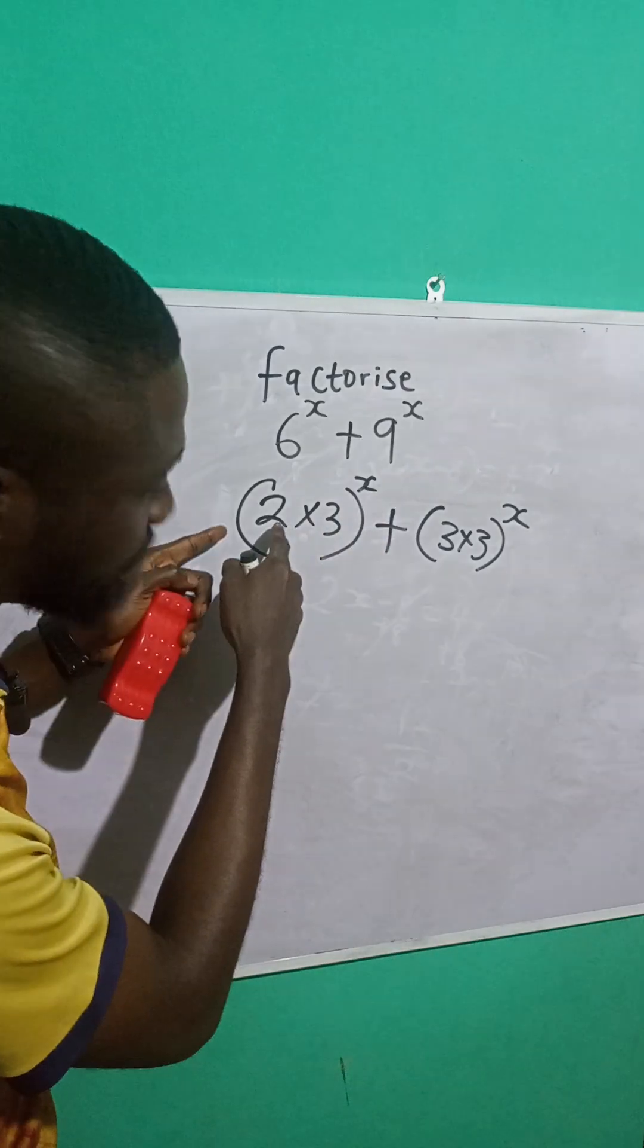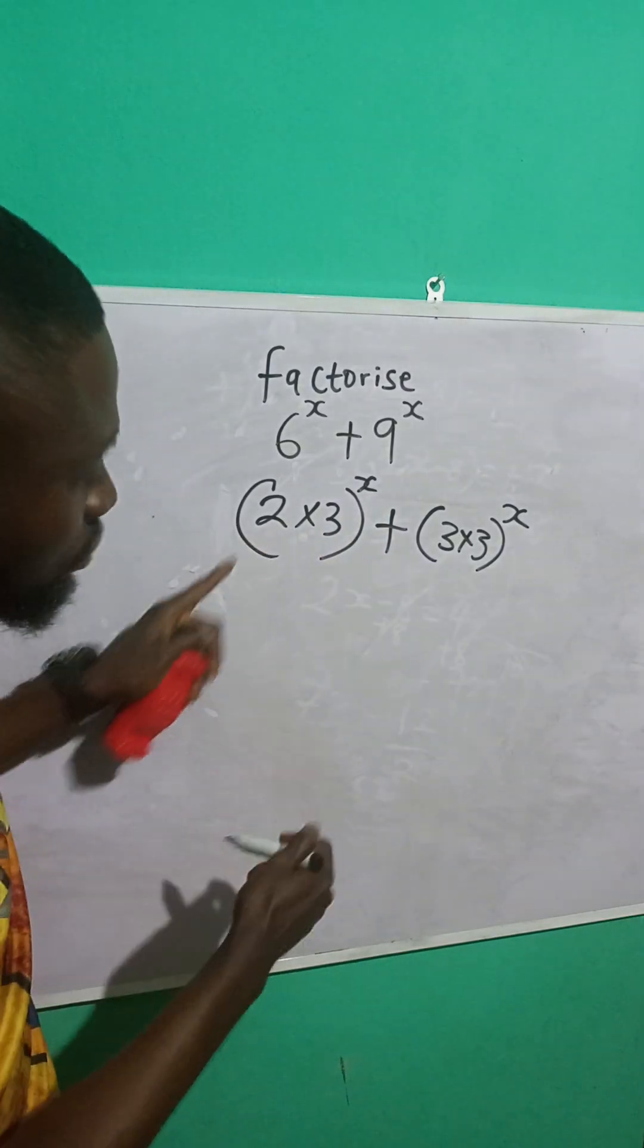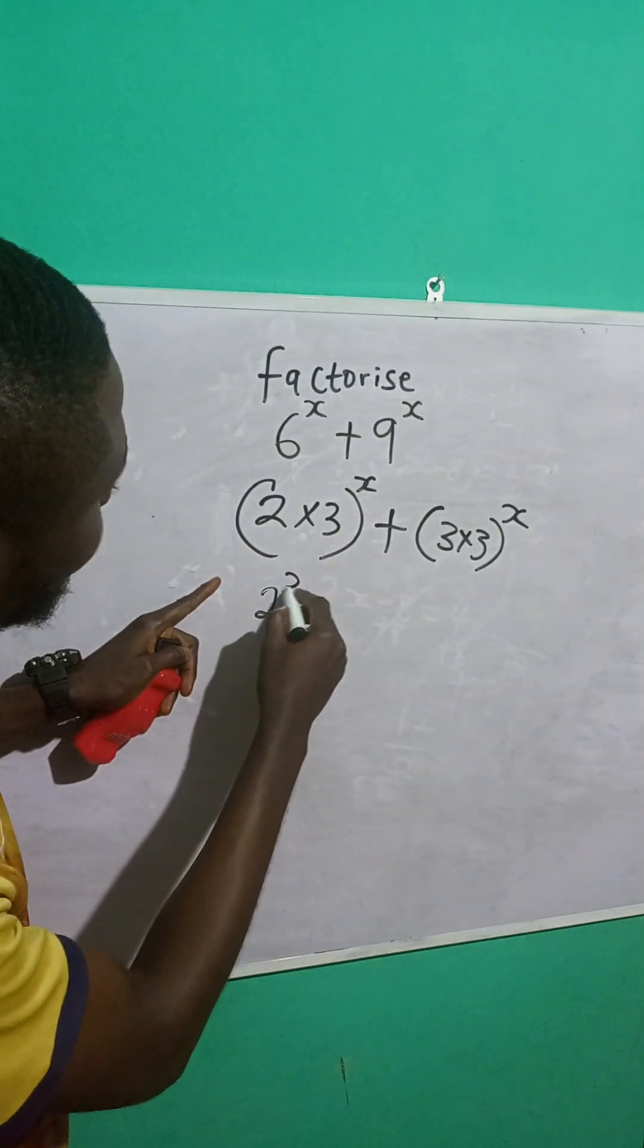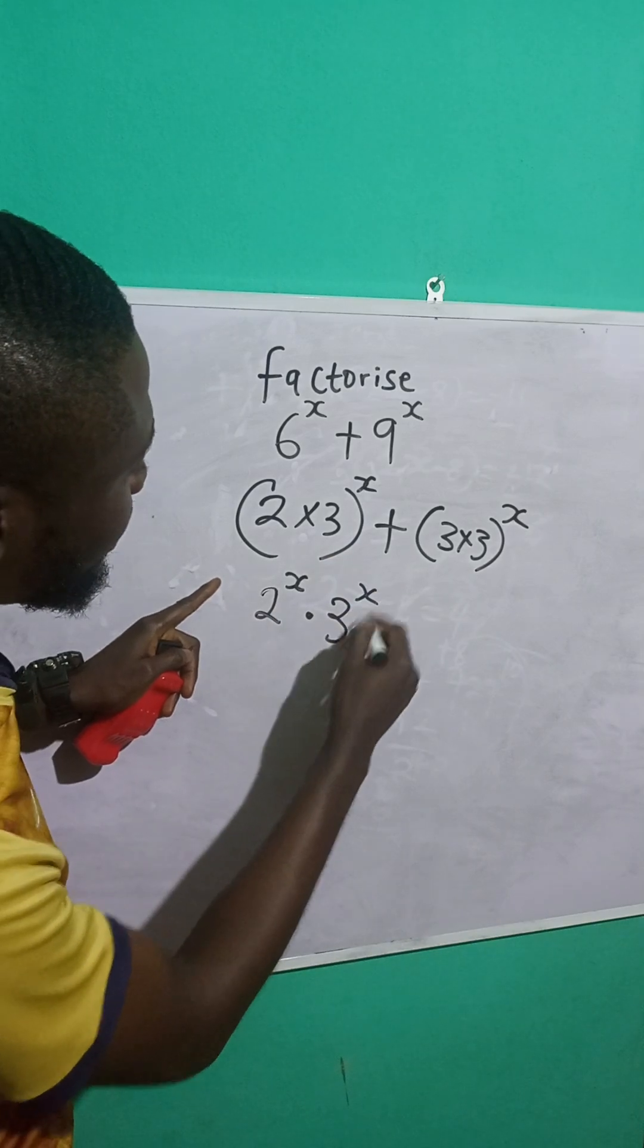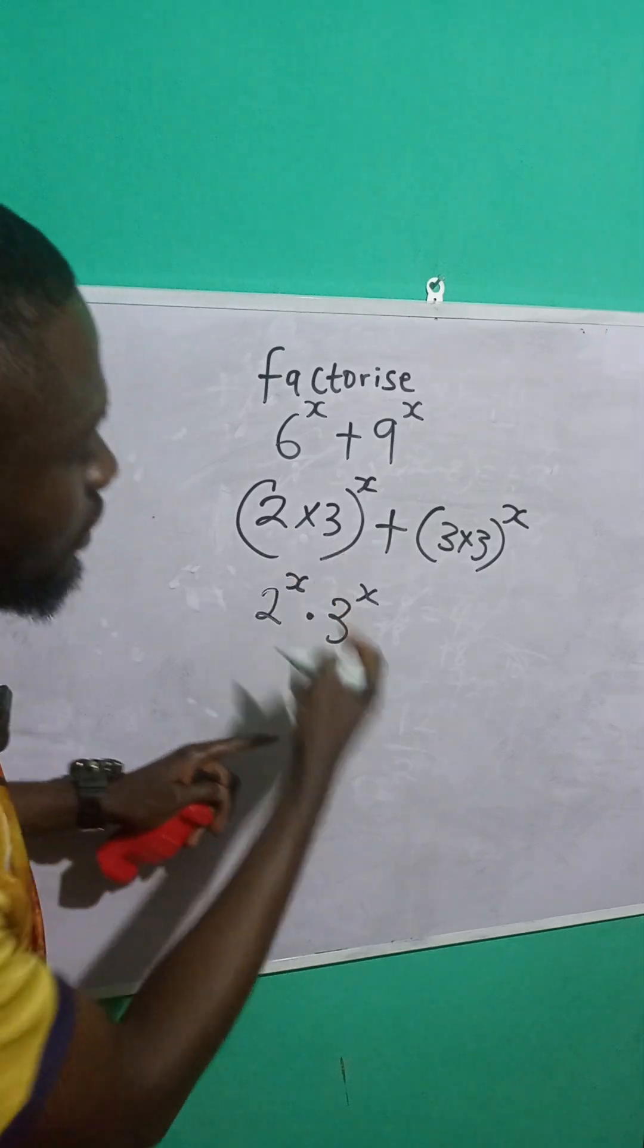So, this x can be distributed to these 2 and 3. So, this will now be what? 2 raised to the power of x multiplied by what? 3 raised to the power of x. As you can see, I just distributed this x to 2 and 3.